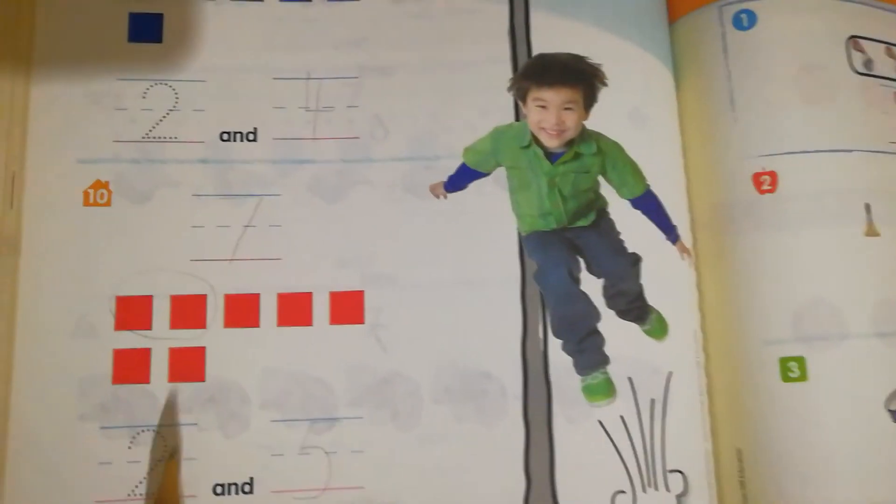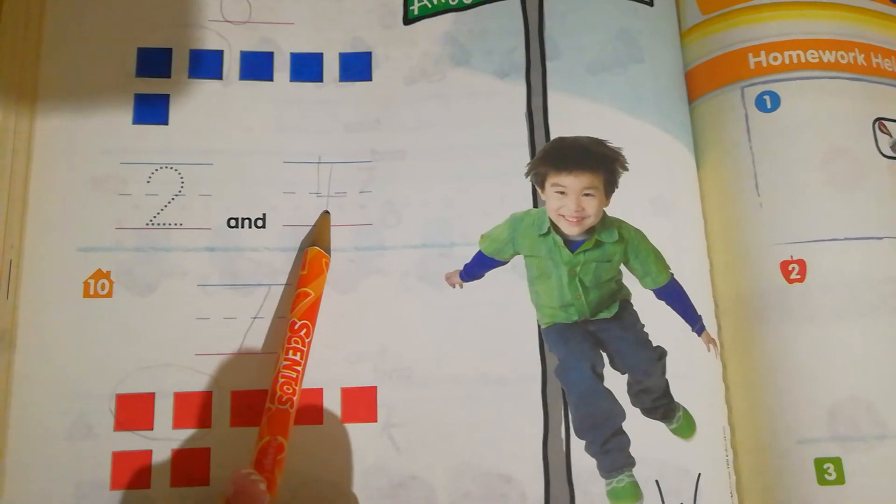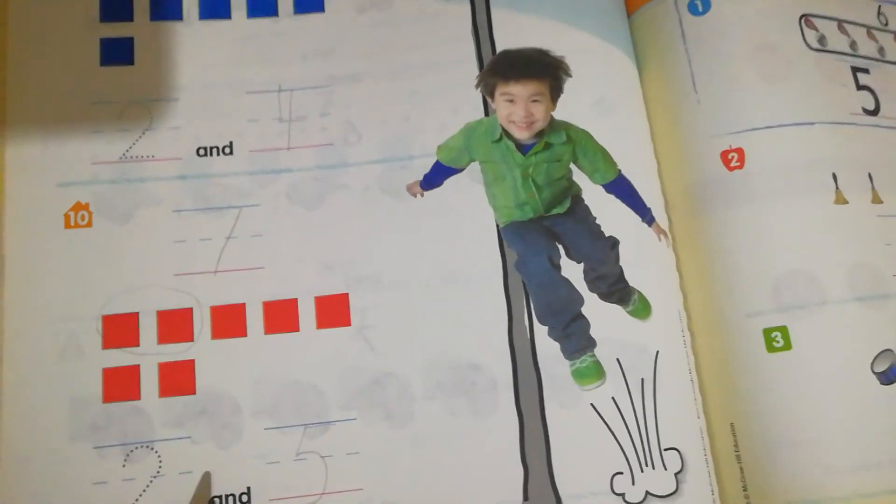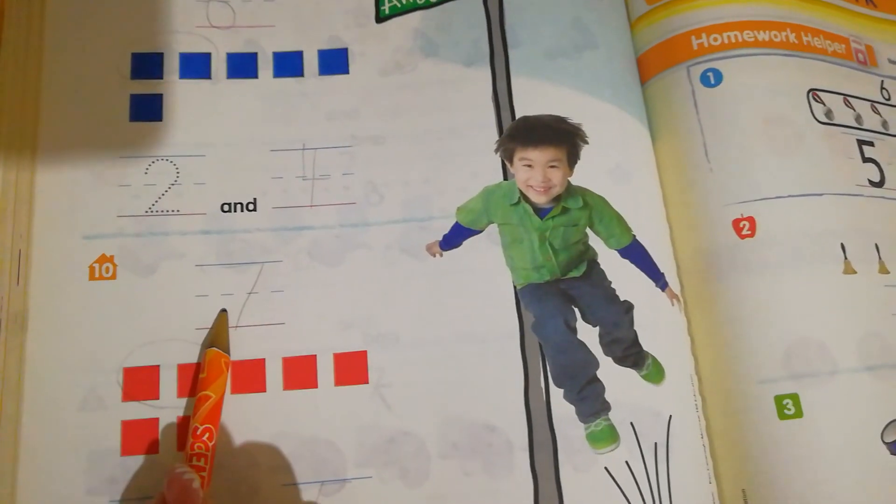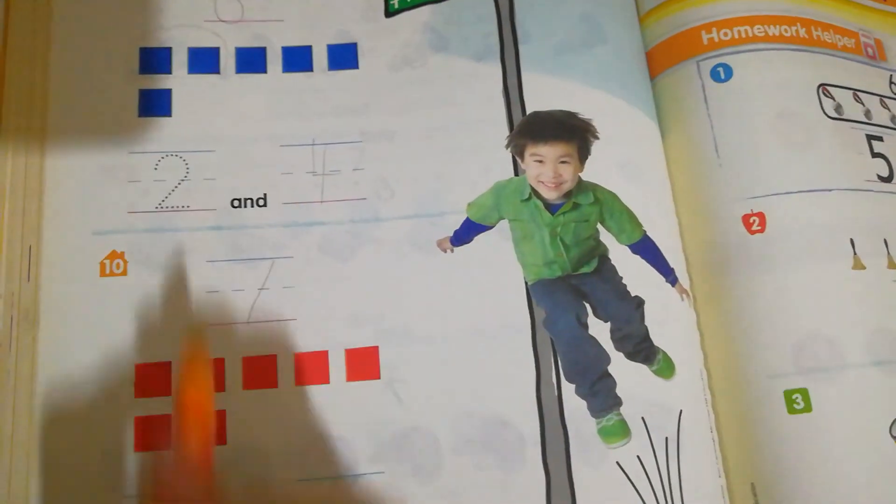Look here, two and four make six, but at the bottom here, two and five make seven. Can you see the difference?